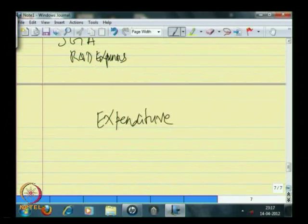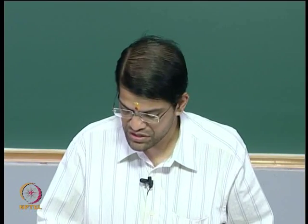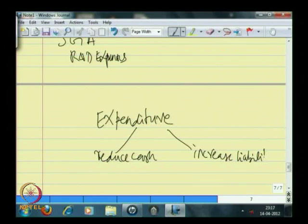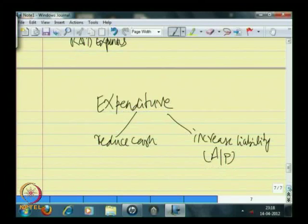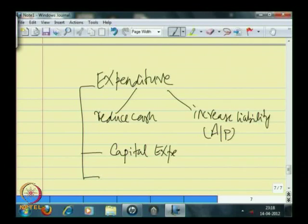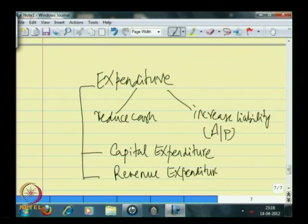It is easy to confuse an activity that consumes cash without creating an asset with one that does, when you broadly define expenditure as any activity that consumes cash. Expenditure will either reduce cash or increase liability — for example, you say you will pay cash later, which means it increases accounts payable. This expenditure can be for two purposes: capital expenditure or revenue expenditure.